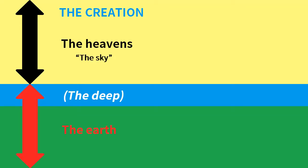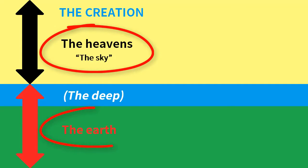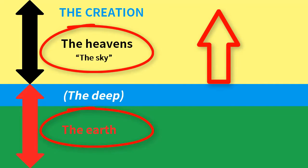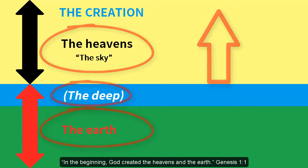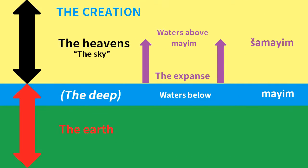Rather, the cosmology of Genesis 1 views the creation as having two parts: the sky and the earth. The sky starts at the surface of the earth and extends upwards. In the beginning, God created the heavens and the earth. At its origin, the earth was covered with deep water. Because ancient polytheists prayed to their gods for rain, Genesis explains how it was the God of the Bible who created the sky from which rain falls.